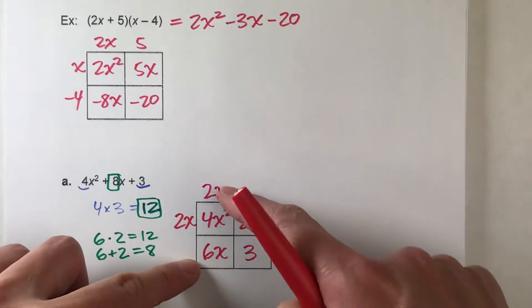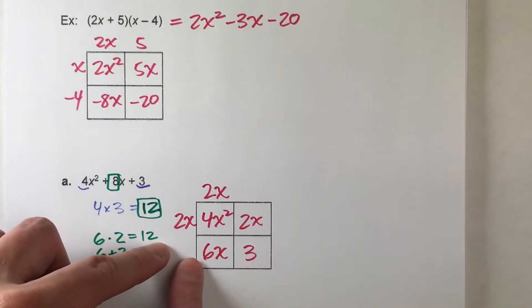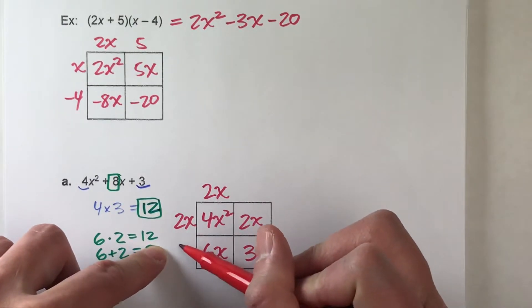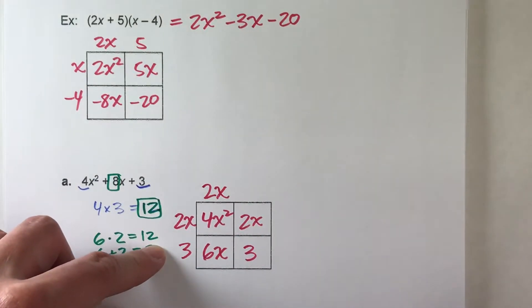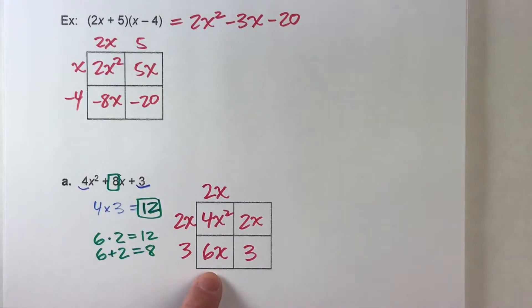Similarly, down below, 2x times what gets me 6x? Oh, 2x times 3 gets me 6x. There we go. So, we've got that part done.